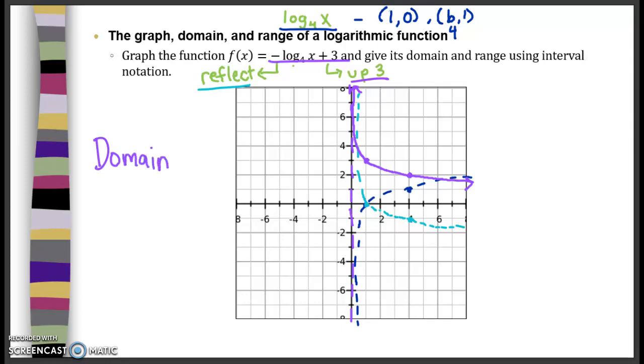My domain are our x values, so I don't go into negative infinity. I start just to the right of 0 and then go to infinity. I'm never going to get to 0, so I don't include 0.